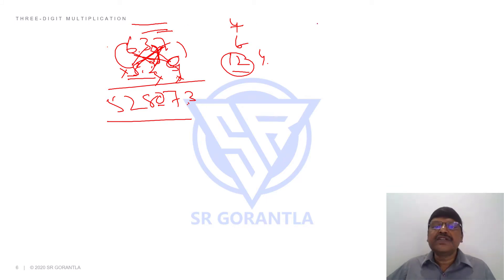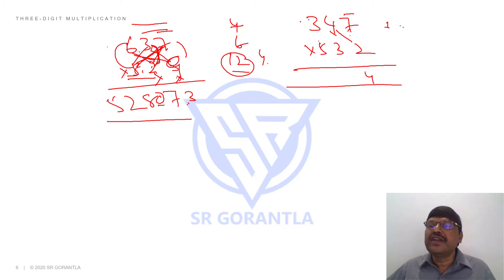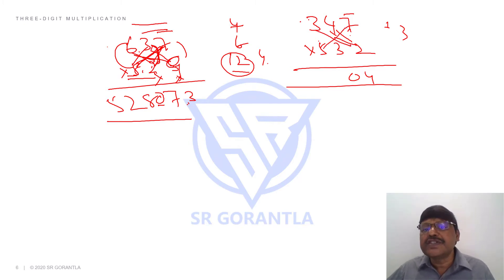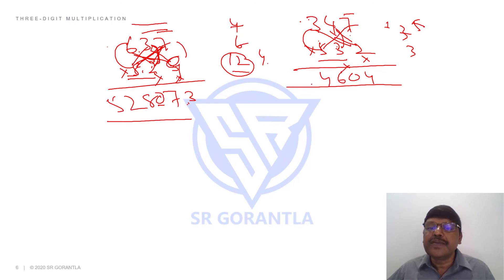Ignore unit place and take next two: eight, six is forty-eight plus four carry is fifty-two. One more example: 347 into 532. Step 1: fourteen — one carry. Step 2: eight plus twenty-one is twenty-nine plus one carry is thirty. Step 3: three, two is six; seven, five is thirty-five. Thirty-five plus six is forty-one plus twelve is fifty-three. Fifty-three plus three carry is fifty-six. First round done. Second round: leave unit place — nine plus twenty is twenty-nine plus five carry is thirty-four. Leave this: five, three is fifteen plus three carry is eighteen.